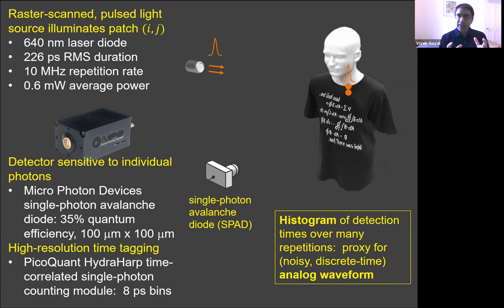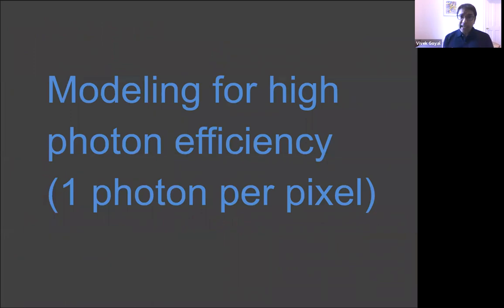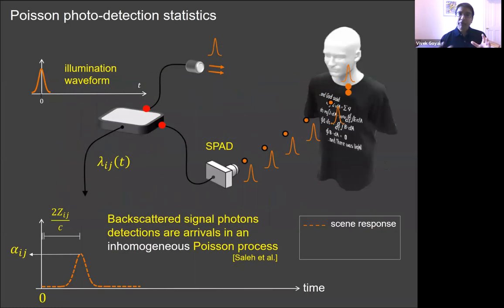An unstated assumption in most work is that a histogram of detection times over many repetitions is treated as a proxy for the analog waveform. It's in discrete time because there's some finite time resolution of the time tagging, and it's noisy. But a histogram starts to seem like a silly concept with just a handful of detections. So forming images from so few detections might seem unreasonable. One of the key points from the first part of my talk is that it's not unreasonable to get by with fewer photons than are needed to form a reasonable histogram at each pixel. We want to think about the individual photon detections rather than properties of the histogram.